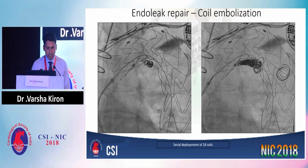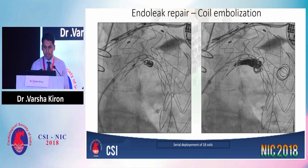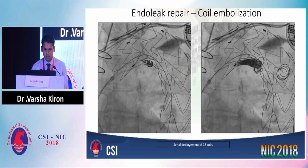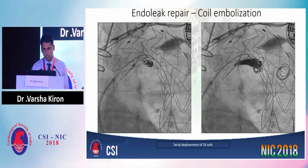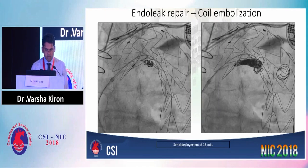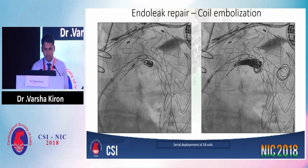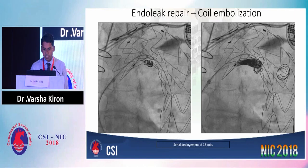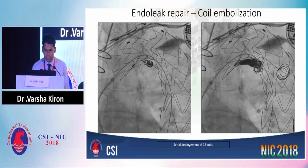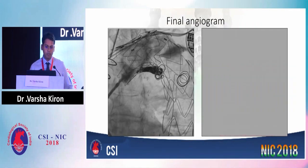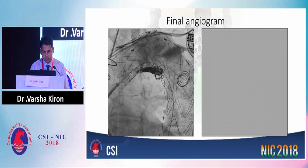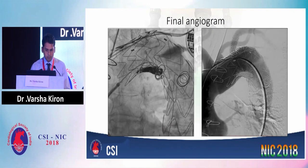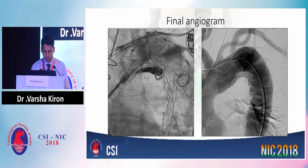This is the serial deployment of coils. Initially we deploy larger coils as they fill up the space, and later on we put smaller and smaller coils so it forms a compact mass. We had actually deployed a total of 18 coils to completely pack down the mass and plug down the track to cut the endoleak. This is the final angiogram at the end of procedure, which shows complete cessation of the type 1 endoleak.